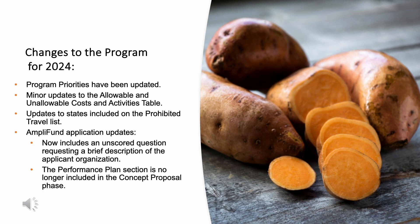If you are already familiar with the SCBGP, here are a few of the changes to the program this year. Several program priorities have been lightly updated — please review them carefully when selecting a program priority or priorities for your project. There have been some minor changes to the allowable and unallowable costs and activities table, and we recommend you refer to the current table as you prepare your proposal. Additional states were included in Travel Ban AB 1887. Finally, we have made a few updates to the AmpliFund application: it now includes an unscored question requesting a brief description of the applicant organization, and the Performance Plan section is no longer included in the concept proposal.